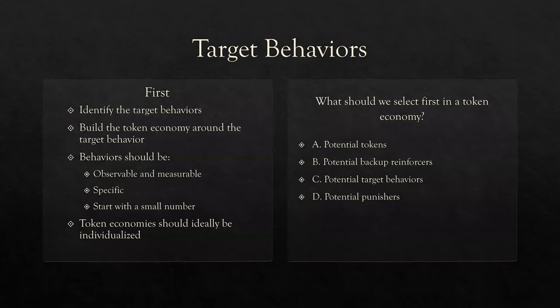First, target behaviors. When choosing skill acquisition or behavior reduction plans, we want to choose our targets first. We build programs around the target behaviors and skills, not the other way around. Identify target behaviors and build the token economy around them. Behaviors should be operationally defined — observable, measurable, and specific — especially when using them in token economies.